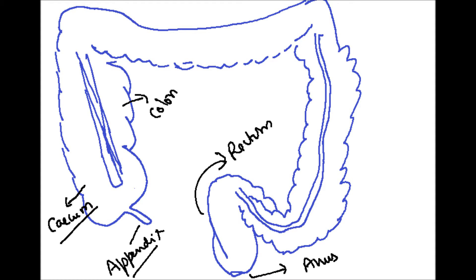Today I'm going to tell you about the large intestine and one of its parts — the cecum. The mnemonic is CACRA: C stands for cecum, A for appendix, another C is colon, R for rectum, and A for anus. These parts form the large intestine.